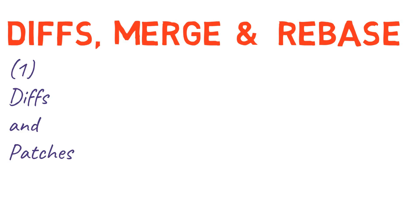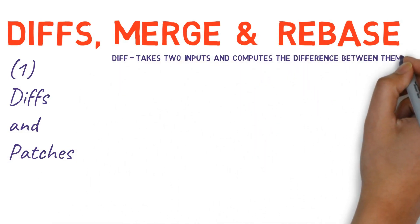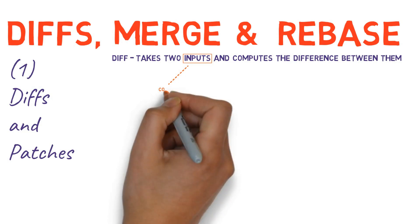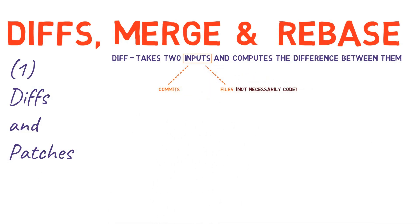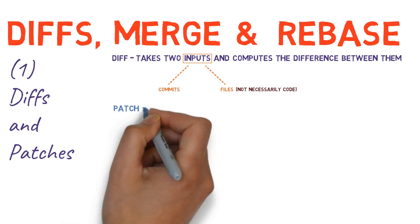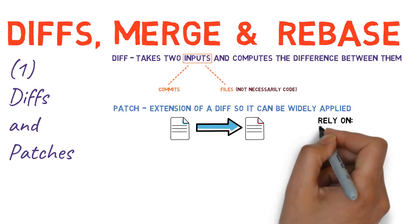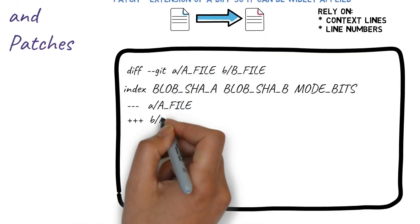In our first video, we learned that a diff shows the differences between two files or snapshots, and can be quite minimal in doing so. A patch is an extension of a diff, augmented with further information such as context lines and filenames, which allow it to be applied more widely. We also looked closely at the format generated by git diff.